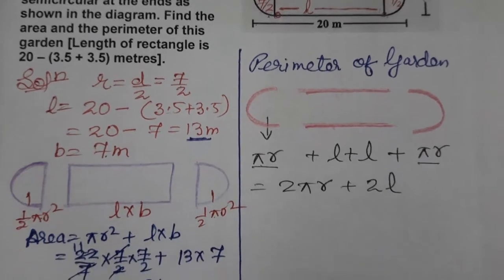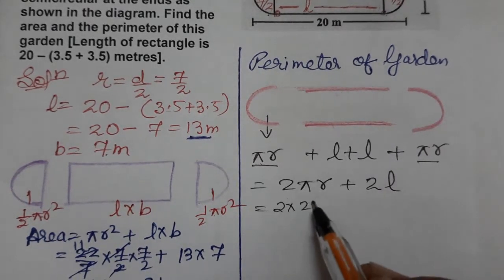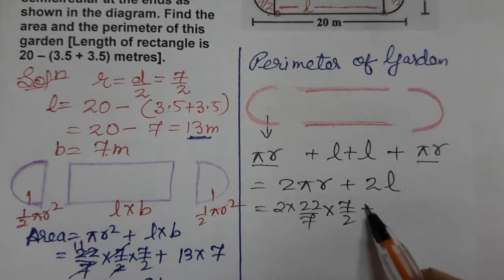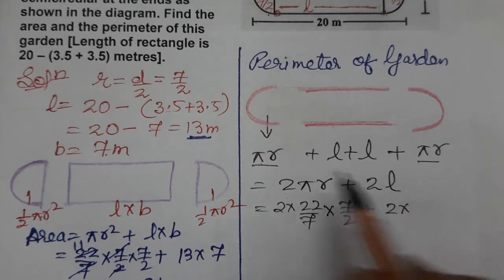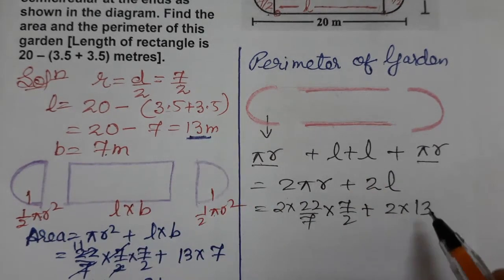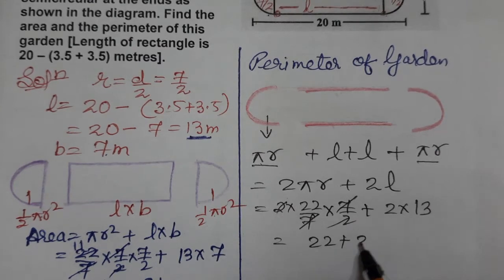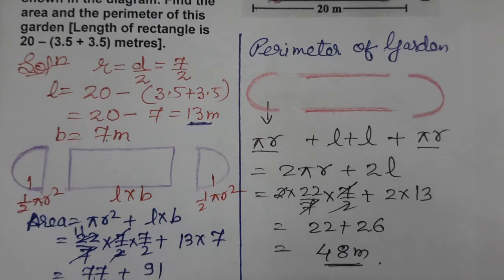Now putting in the values: 2 × 22/7 × 7/2 gives 22. The 7s and 2s cancel, leaving 22. And 2 × length equals 2 × 13 = 26. Adding 22 plus 26 gives 48 meters. So the perimeter of the garden is 48 meters.